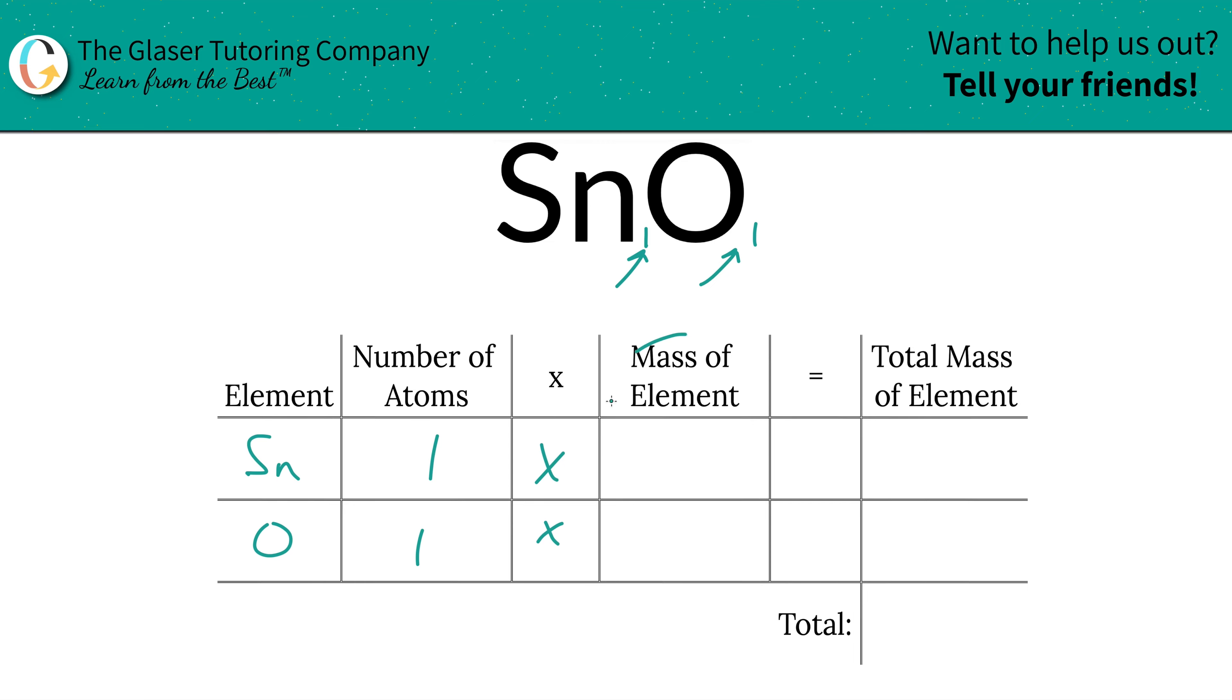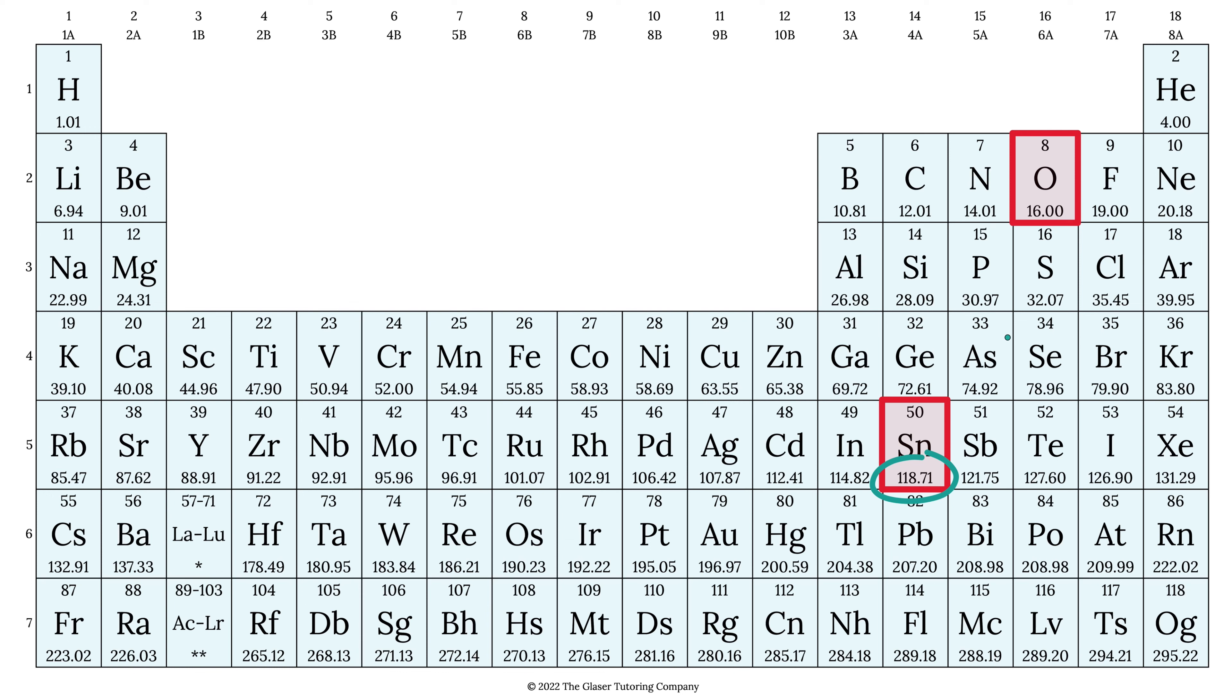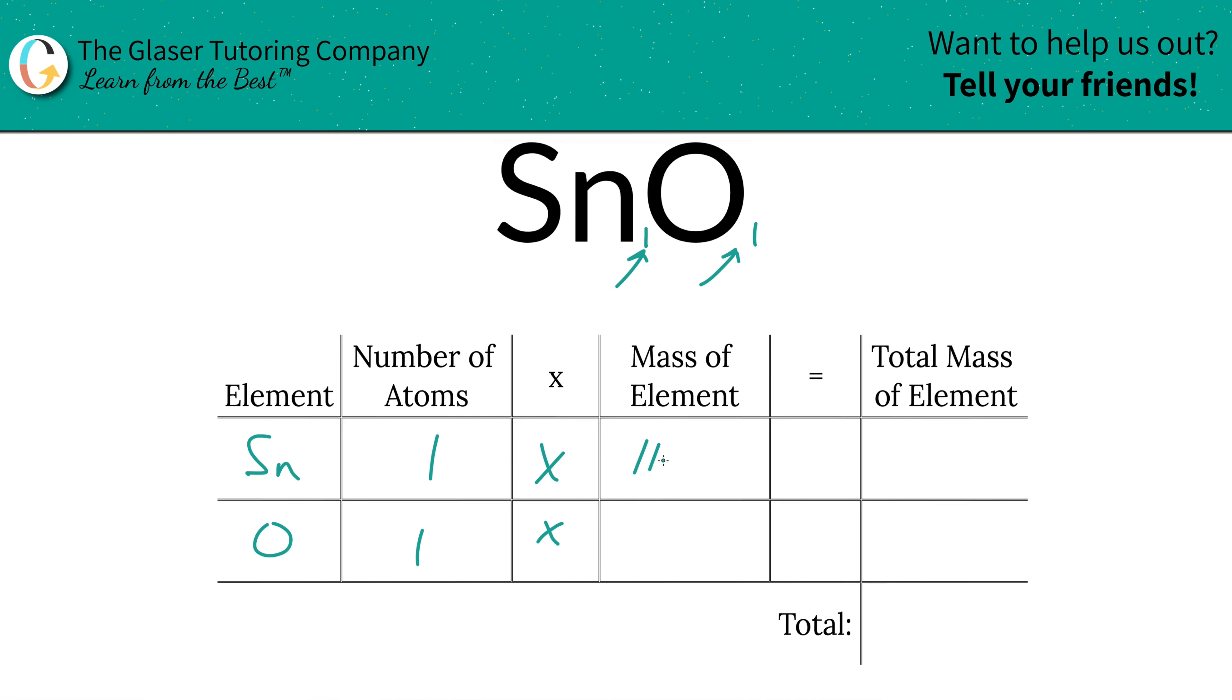Then we're simply going to multiply those values of the atoms by the masses of each element, and those masses are found on the periodic table. So tin is 118.71. Oxygen is 16. So let's write that on in. 118.71. Oxygen was 16.